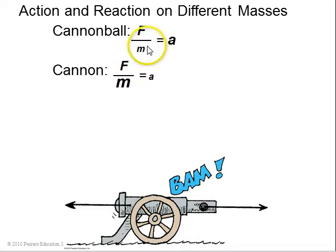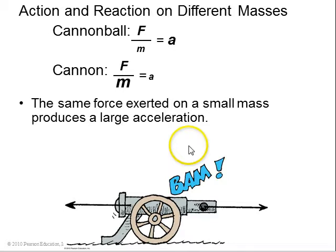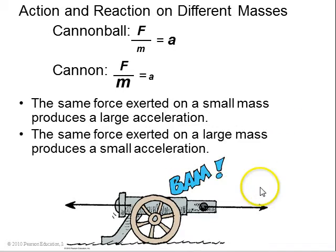But if you look at Newton's second law, you will see that the acceleration of the cannonball that has a small mass will be large. But the acceleration of the cannon, which has a larger mass, will be small. So the same force exerted on a small mass produces a larger acceleration. If it's exerted on a larger mass, it produces a smaller acceleration. Which is why there's a little recoil on the cannon, but the cannonball goes very quickly forwards. Bam!